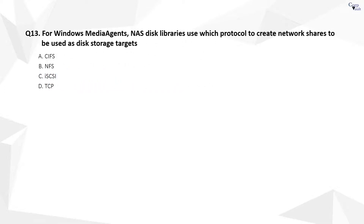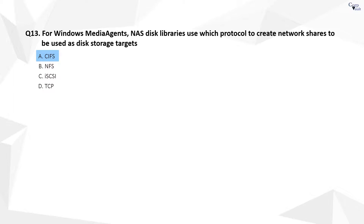Question 13. The correct answer is A. CIFS — Common Internet File System — is an Internet Protocol-based file-sharing protocol. NAS disk libraries use this protocol to create network shares to be used as target disk storage.